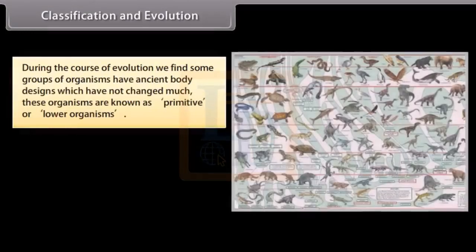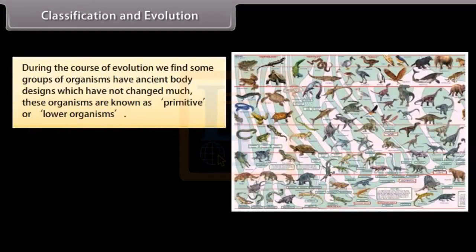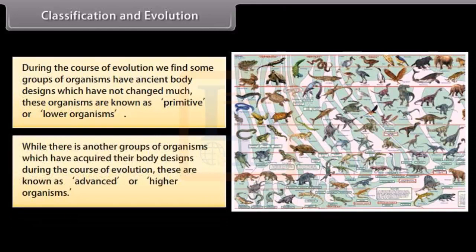During the course of evolution, some groups of organisms have ancient body designs which have not changed much. These organisms are known as primitive or lower organisms. Another group of organisms acquired their body designs during the course of evolution; these are known as advanced or higher organisms.